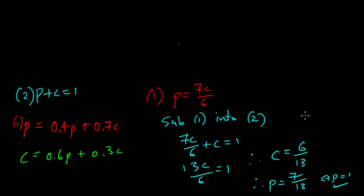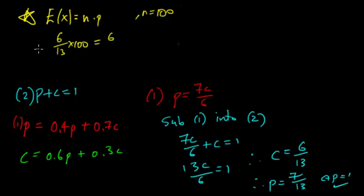Now this relates to the first example, because if you remember back, the expected number of people is equal to the number of people times the probability, so NP. Now the number of people was equal to 100. We can times 100 by these probabilities and we'll get 6 over 13 times 100 equals 600 over 13.